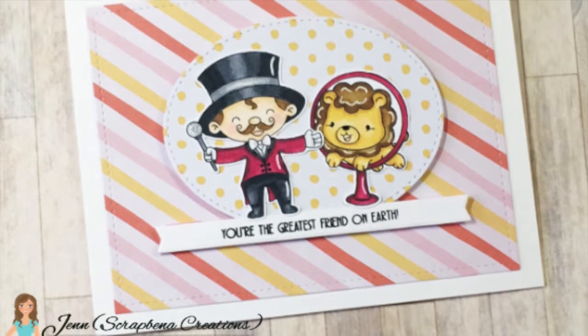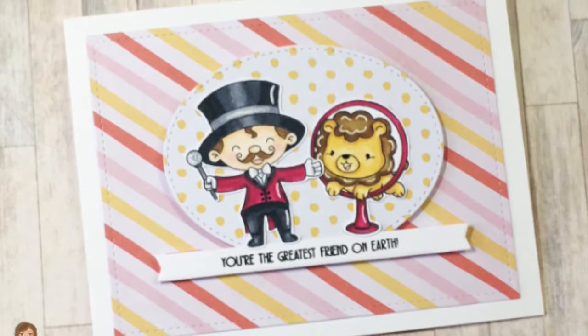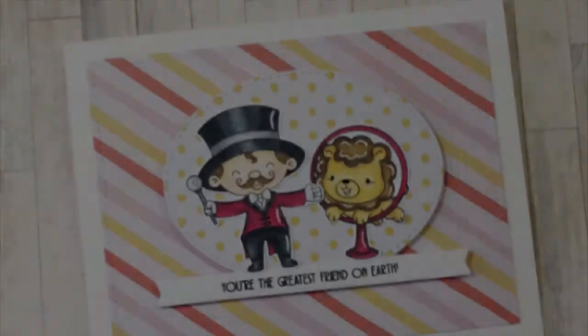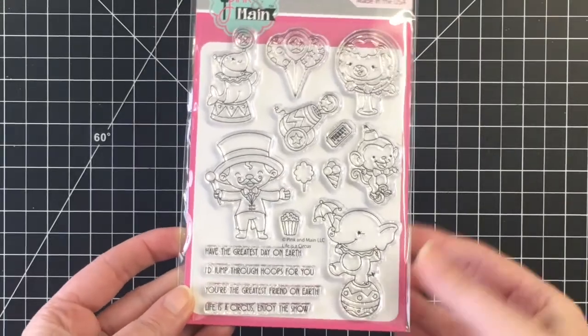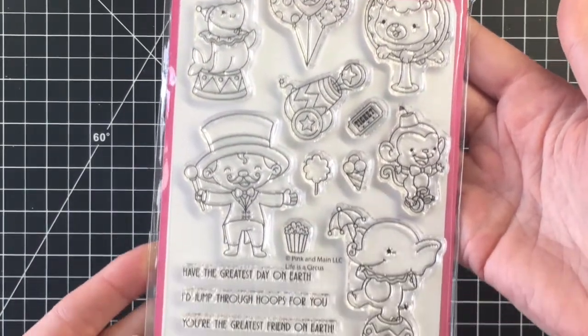Hello everybody, it's Jen. Welcome back to my channel. Thanks for joining me today. I'm going to be making a card using Pink and Main Life is a Circus. This is an adorable stamp set.